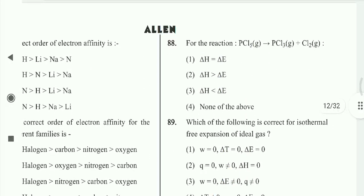Question 88: For the reaction PCl₅(g) → PCl₃(g) + Cl₂(g), delta H and delta E — delta E is more than delta H. Option 3rd is correct.